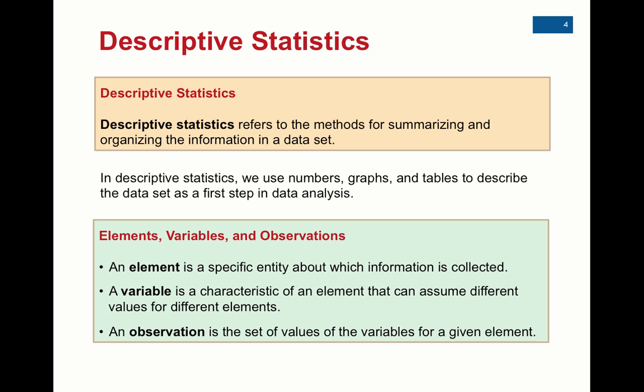The variable is the characteristic of that element. So an element can have a bunch of characteristics based on how many questions you ask. It could be age, weight, height, hours worked, number of children. Those are all variables. Color of car, whether they're going to vote for a certain thing or not, whether or not they believe in aliens. Those are all variables.